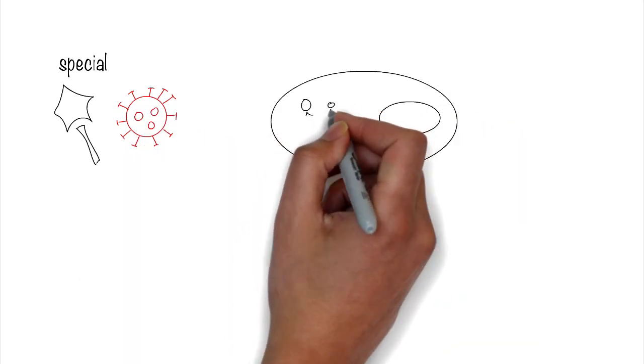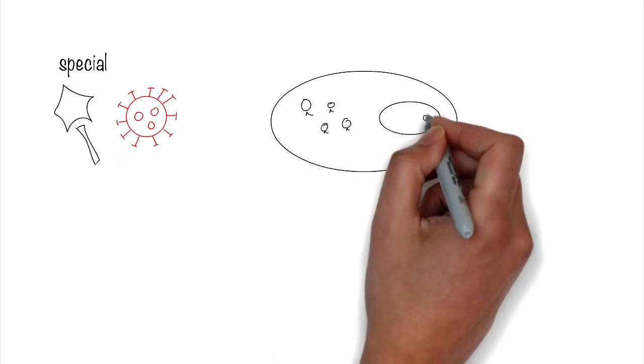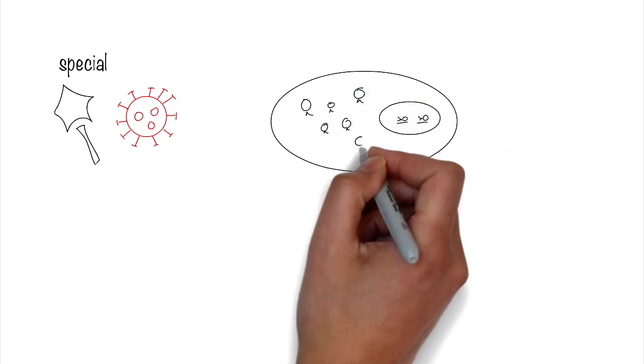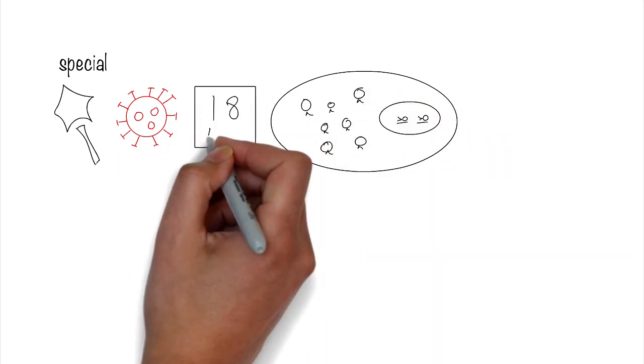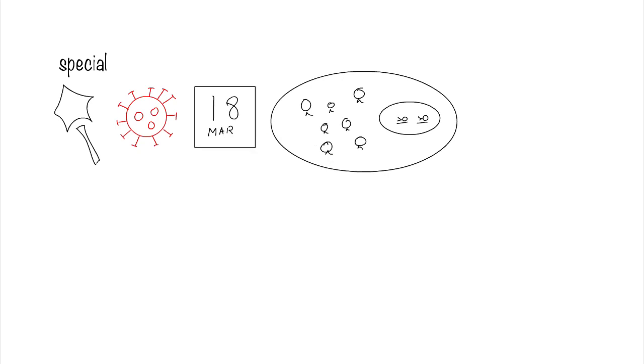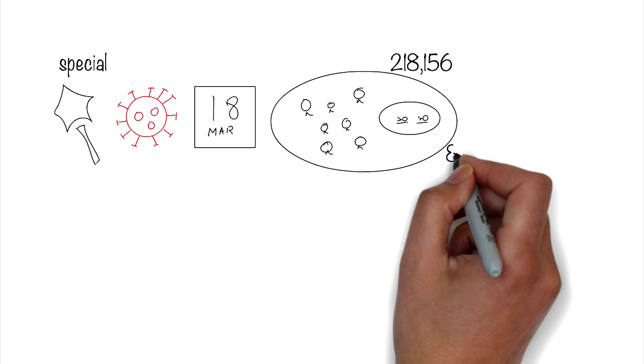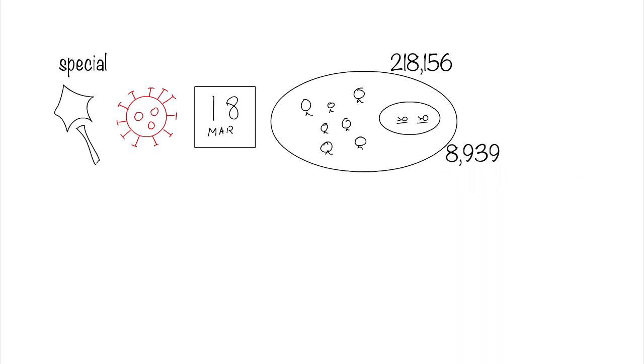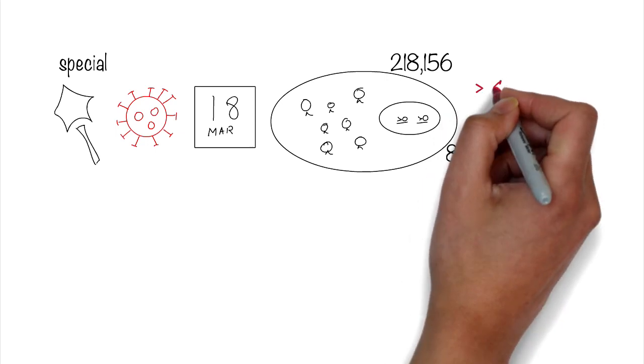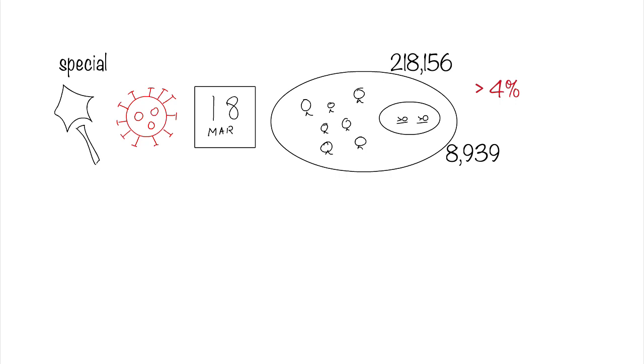As of March 18, 2020, 2300 GMT hour, there were currently 218,156 confirmed cases and 8,939 deaths from the coronavirus outbreak. The death rate of 4% is alarming, so it's good that we have AI help us out with its containment.